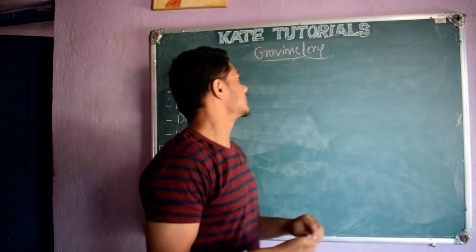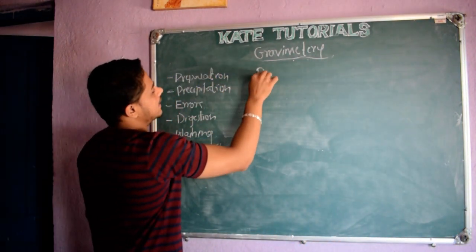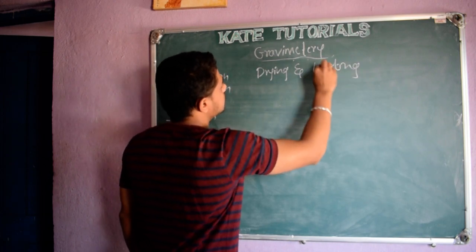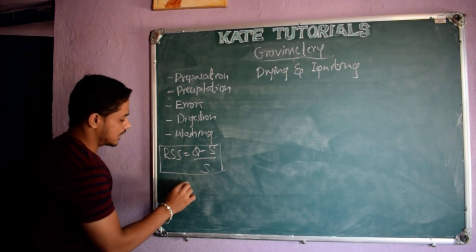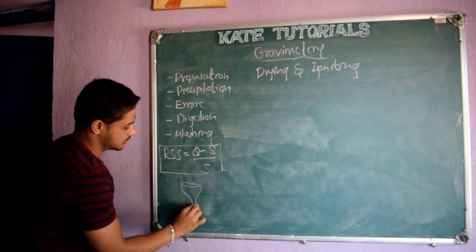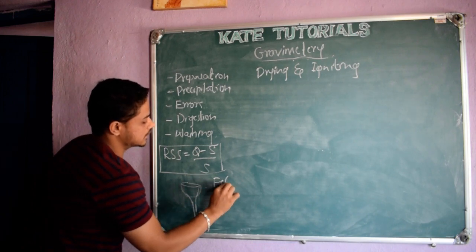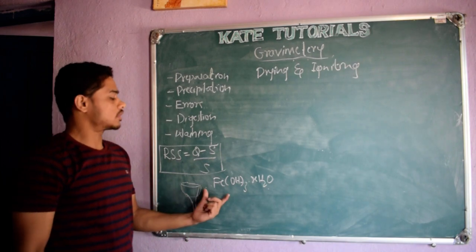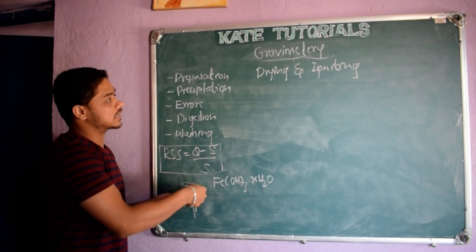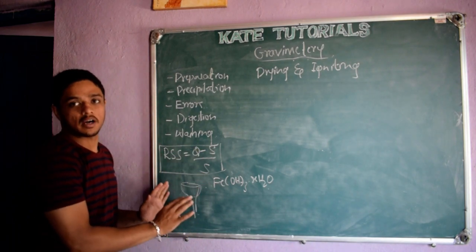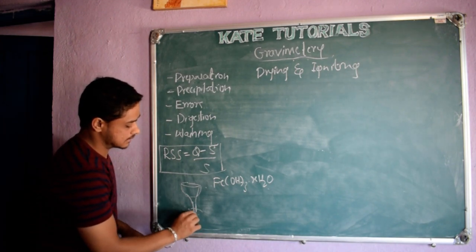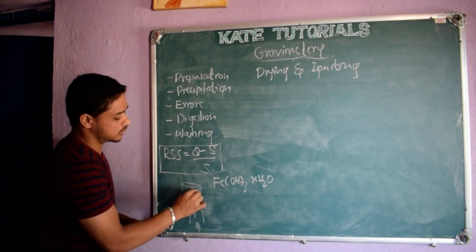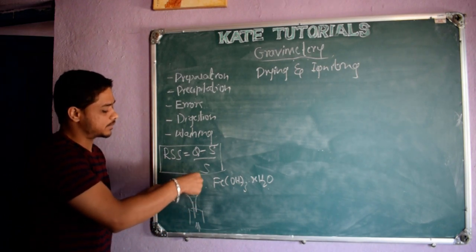In this class, let us discuss what we do after washing — drying and igniting. I got this precipitate: Fe(OH)3·XH2O. After washing, I got pure Fe(OH)3·XH2O along with the filter paper. I will keep it in an oven and supply heat so the precipitate dries and breaks apart. Once it is dried completely, I will take it and use one of two kinds of crucible.